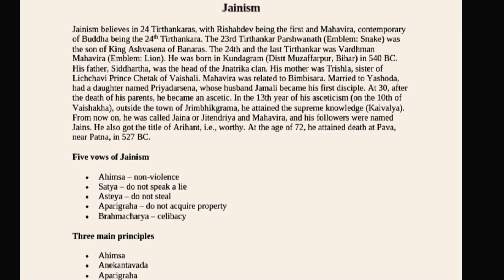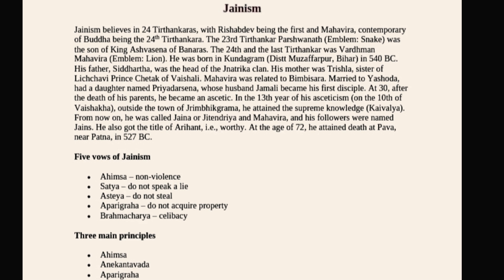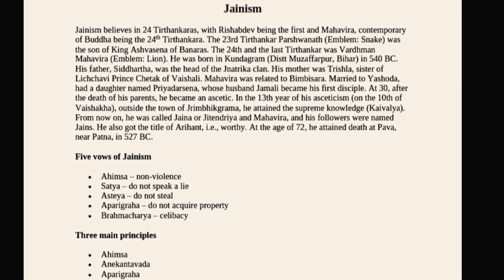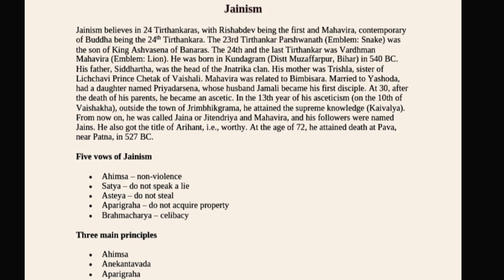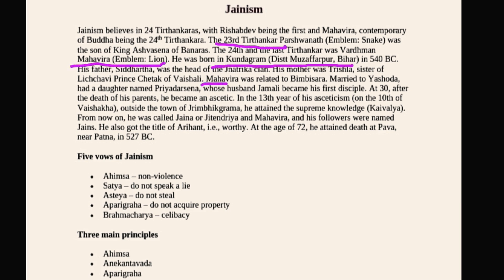Jainism has 24 Tirthankaras, with Rishabhdev being the first and Mahavira being the 24th. The 23rd Tirthankara, Parshvanath, whose emblem was the snake, was the son of King Ashvasena of Banaras. The 24th and last Tirthankara was Vardhaman Mahavira, whose emblem was the lion.